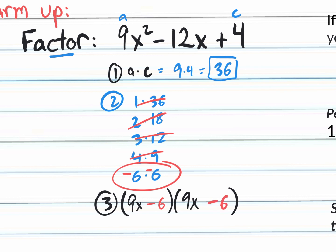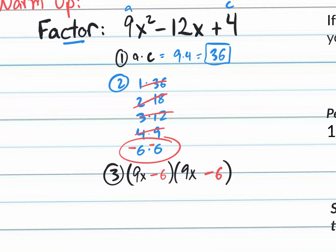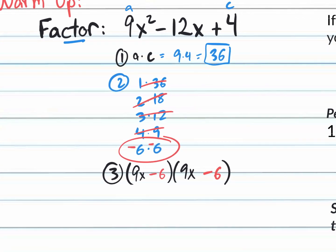Step 4 is dividing each binomial by the largest possible value. A 9 and a 6 can both be reduced by 3. So dividing both by 3, you get your final answer: 3x minus 2 and 3x minus 2. That's your factored form answer.